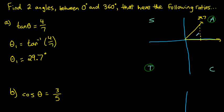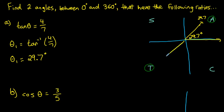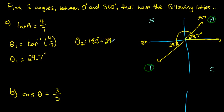The ratio between the opposite side and the adjacent side is 4 over 7. Now we want to find the other possible angle with the same ratio. We use the reference angle — the angle between the terminal arm and the x-axis — which is 29.7 degrees. We draw another terminal arm in the tan (third) quadrant with a reference angle of 29.7 degrees. Since we've gone past 180 by 29.7, the second angle is 180 + 29.7 = 209.7 degrees.